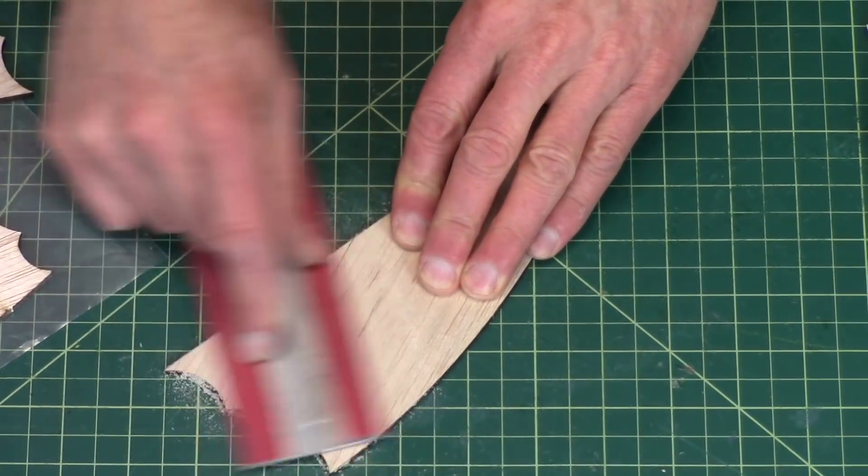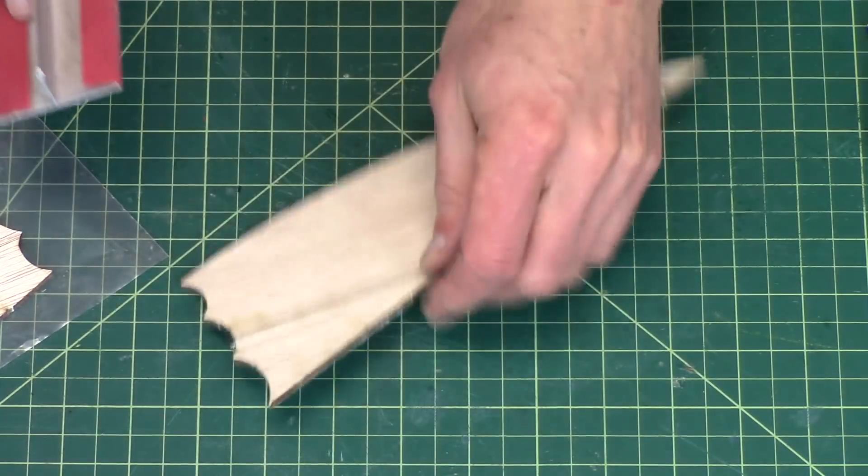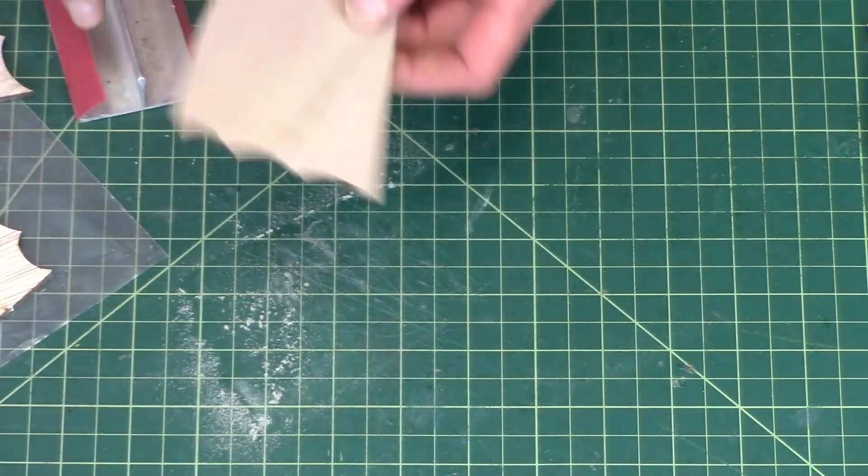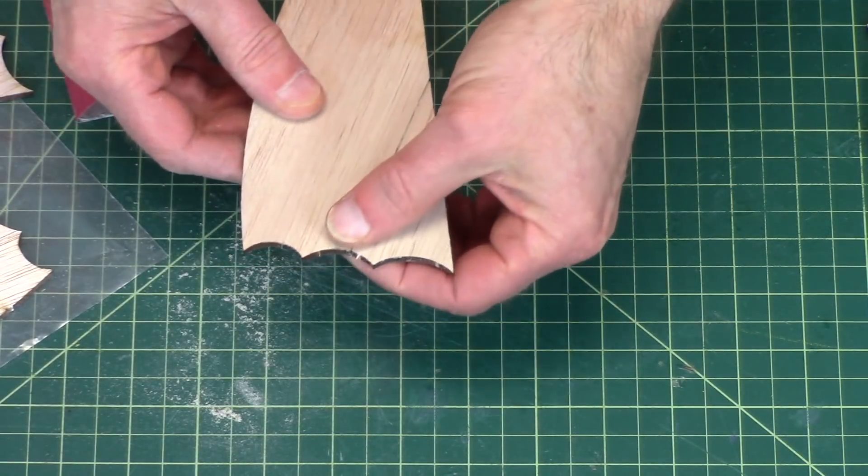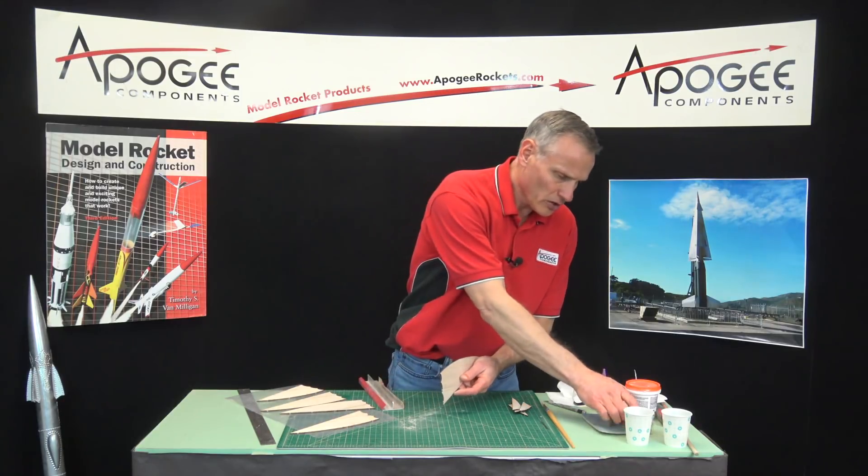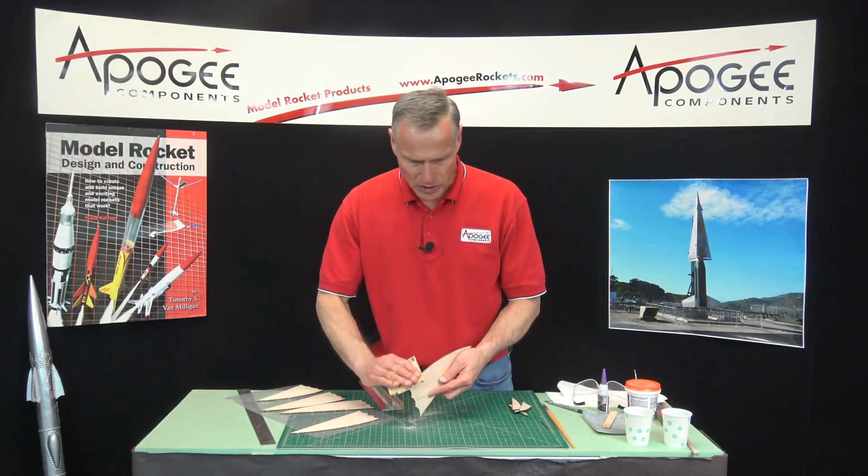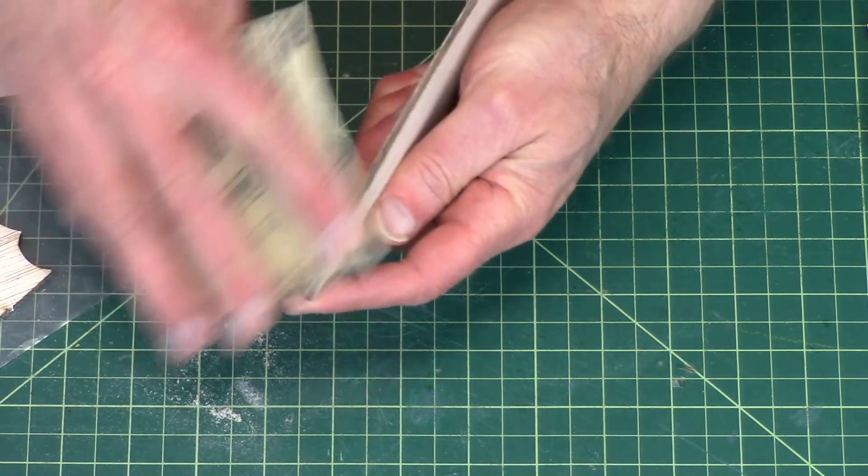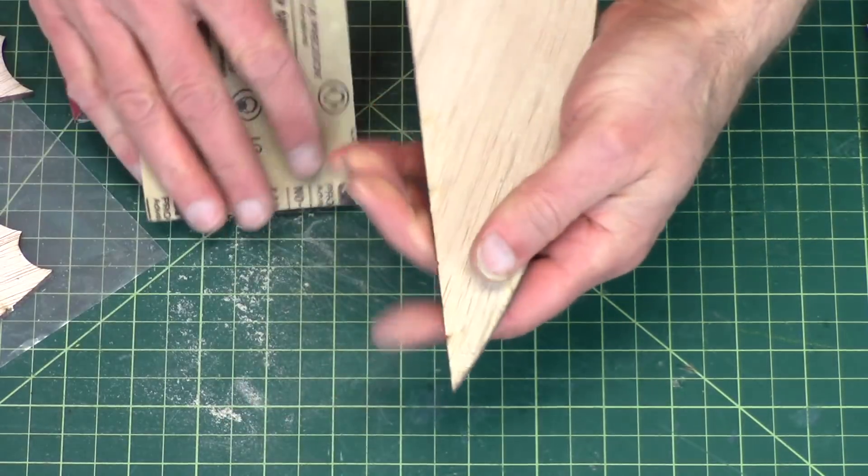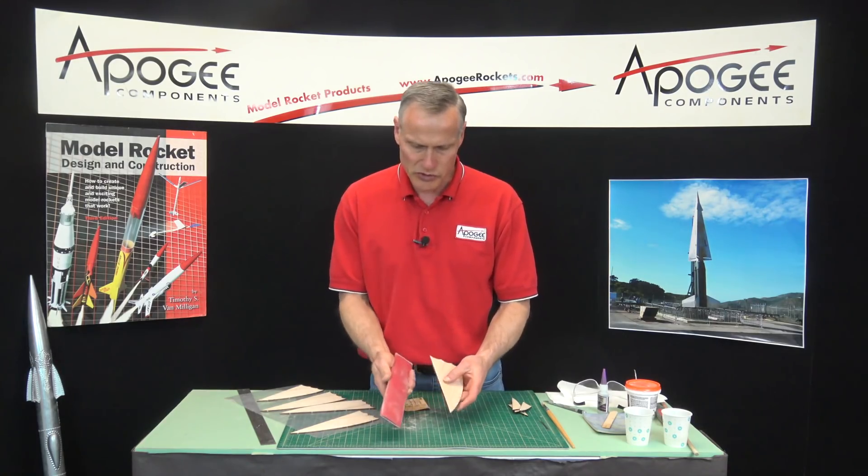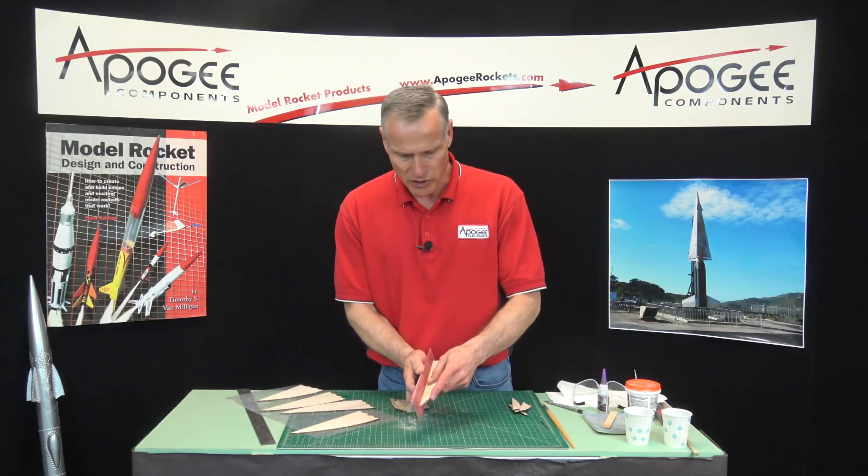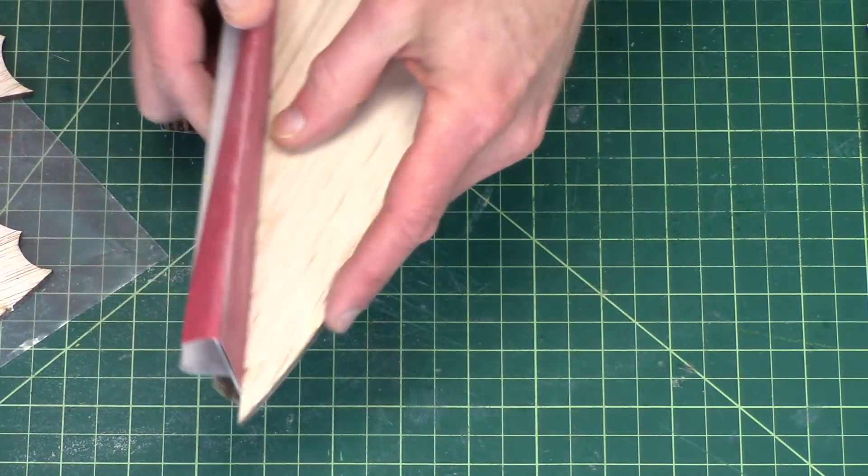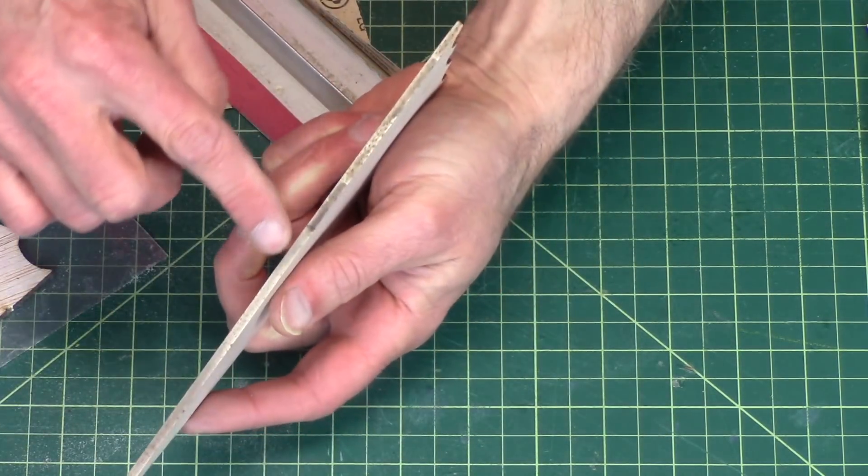Make sure that it's even. You can go ahead and sand the edges now at this time too. Sand the little ticks off of there, the little tick marks.